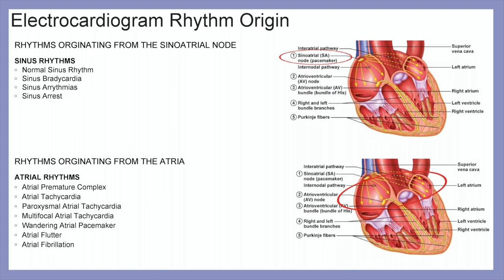Rhythms that originate within our atria are our atrial rhythms, including atrial premature complexes, atrial tachycardias, paroxysmal atrial tachycardia, multifocal atrial tachycardia, wandering atrial pacemakers, atrial flutter, and atrial fibrillation.